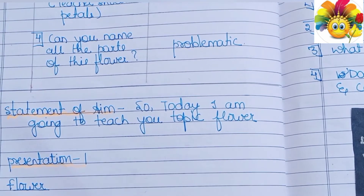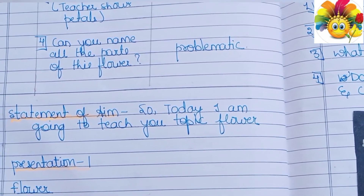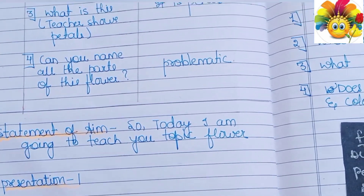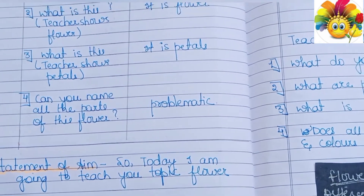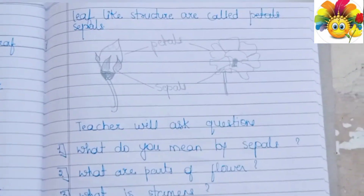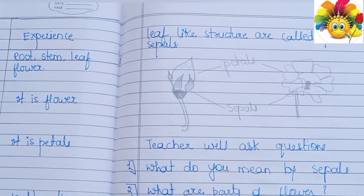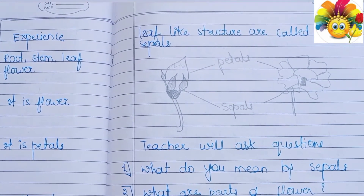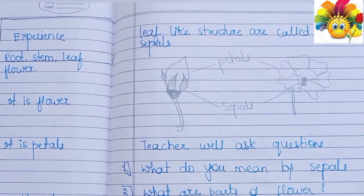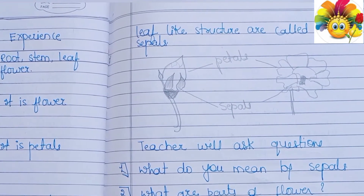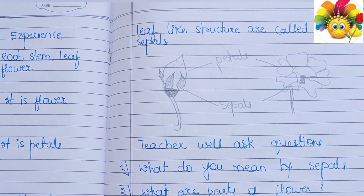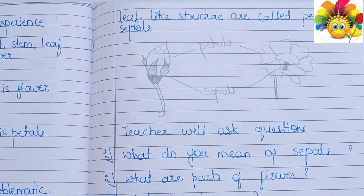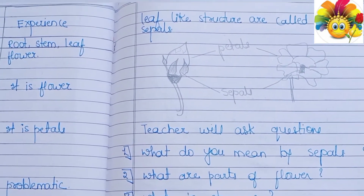This is the statement of aim. After asking questions to students, we have to give the statement of our aim — like 'Students, today we are going to teach you about flowers.' Now we have to explain everything about flowers, so we give a demonstration. You can show them a flower and show them the parts of the flower.